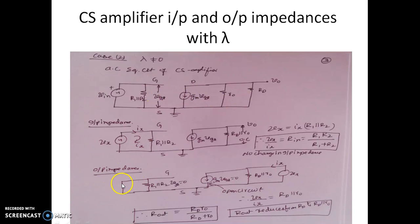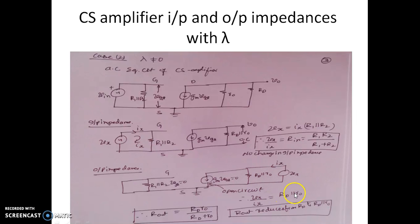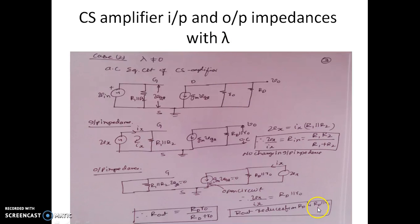To find the output impedance with lambda non-zero, we short circuit the input, making all independent sources zero. Since the input is zero, Vgs also becomes zero, so the current source Gm·Vgs is open circuit. Now Vx/Ix gives Rd parallel R0, so Rout equals Rd·R0/(Rd+R0). The output impedance reduces from Rd (when lambda equals zero) to Rd parallel R0. This is the effect of channel-length modulation on the output impedance; the input impedance remains unchanged.